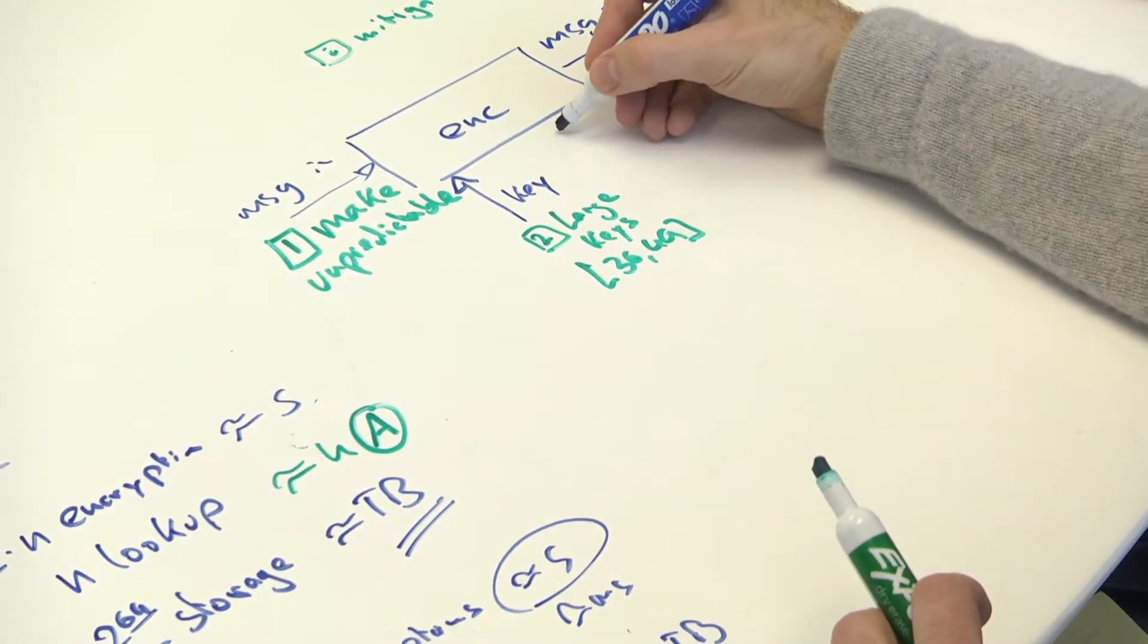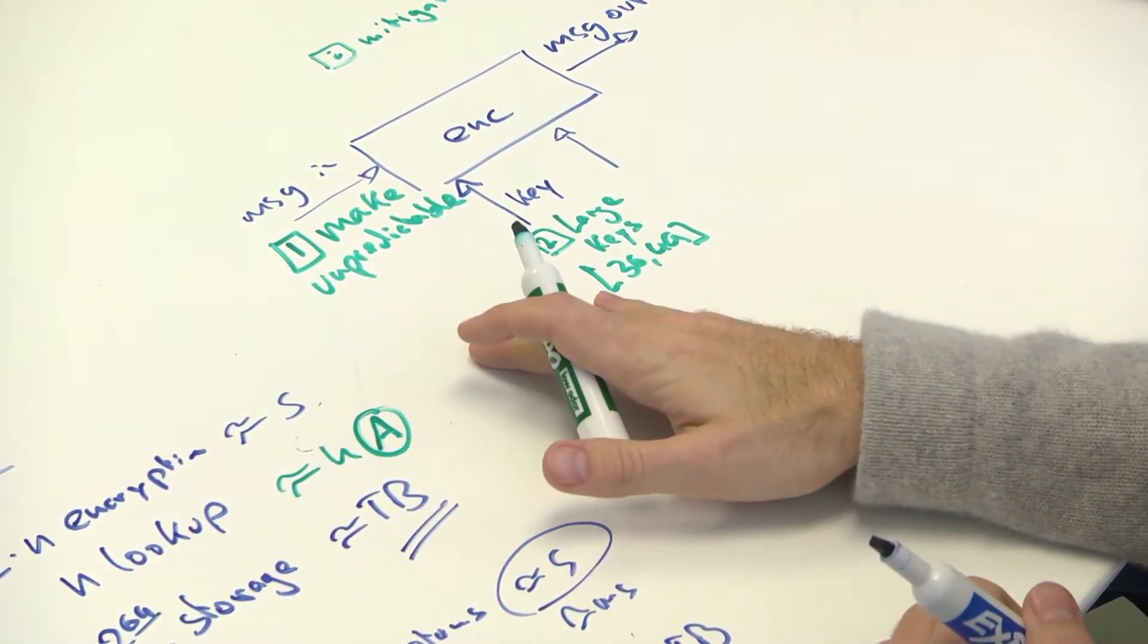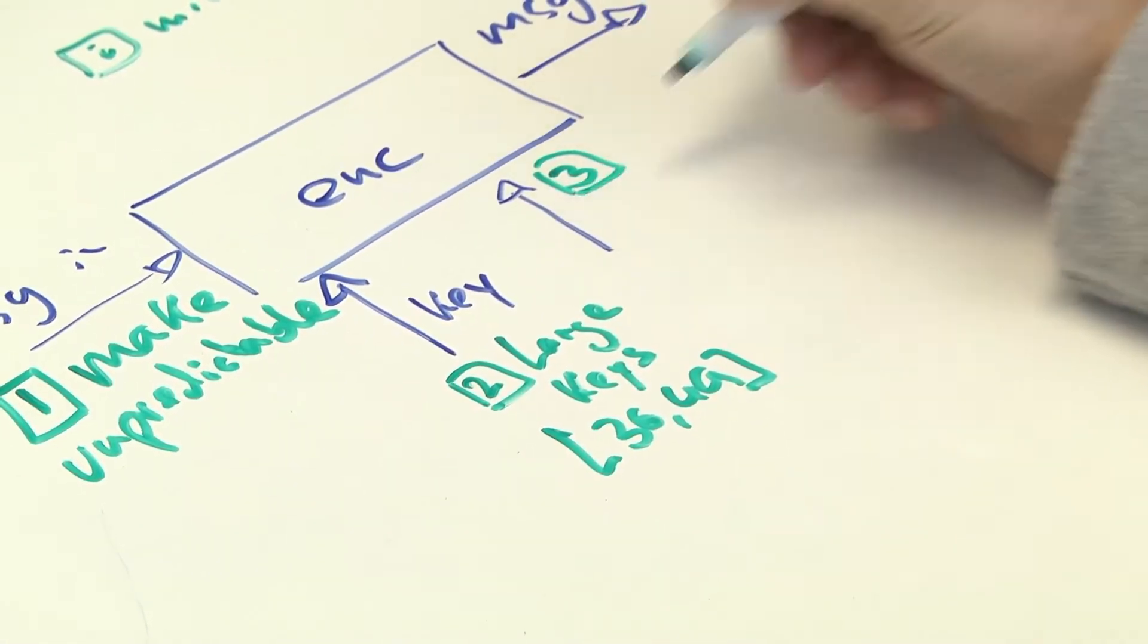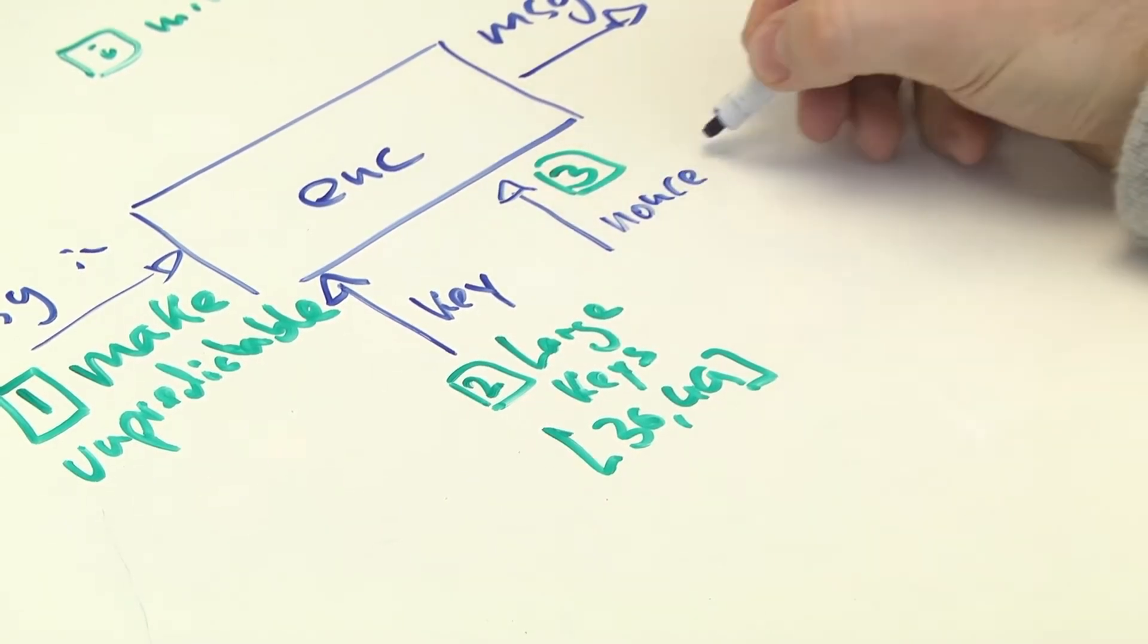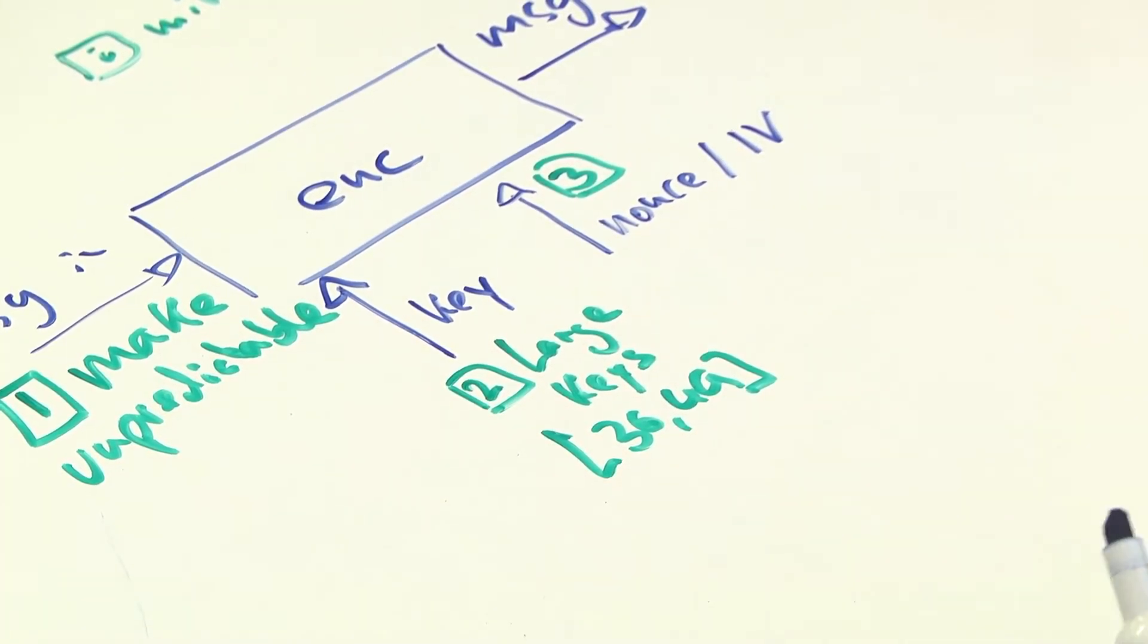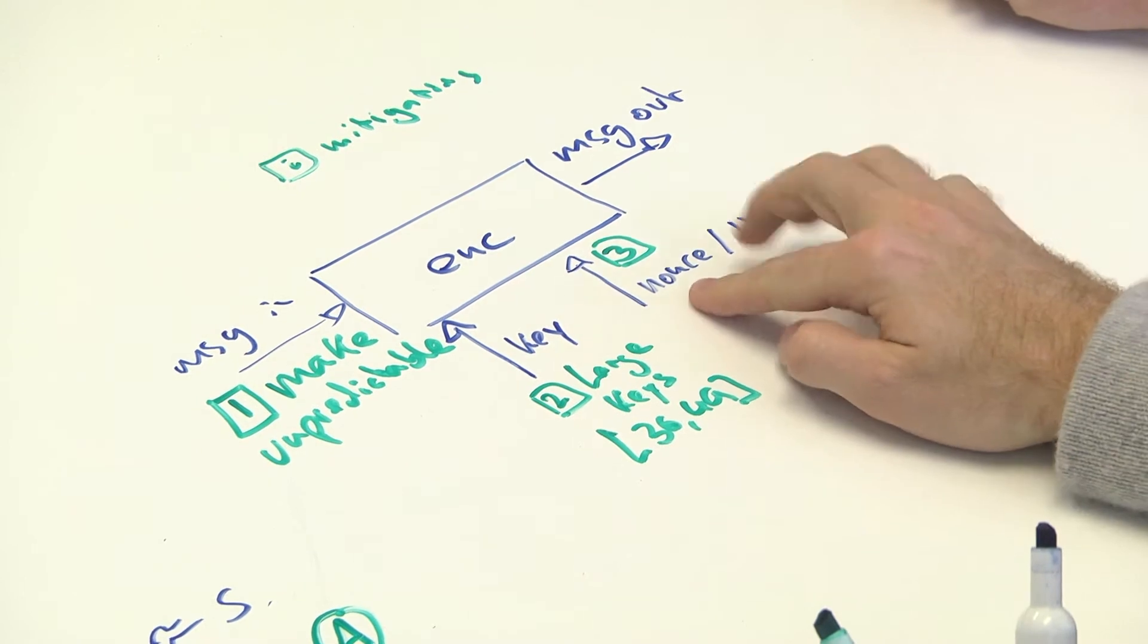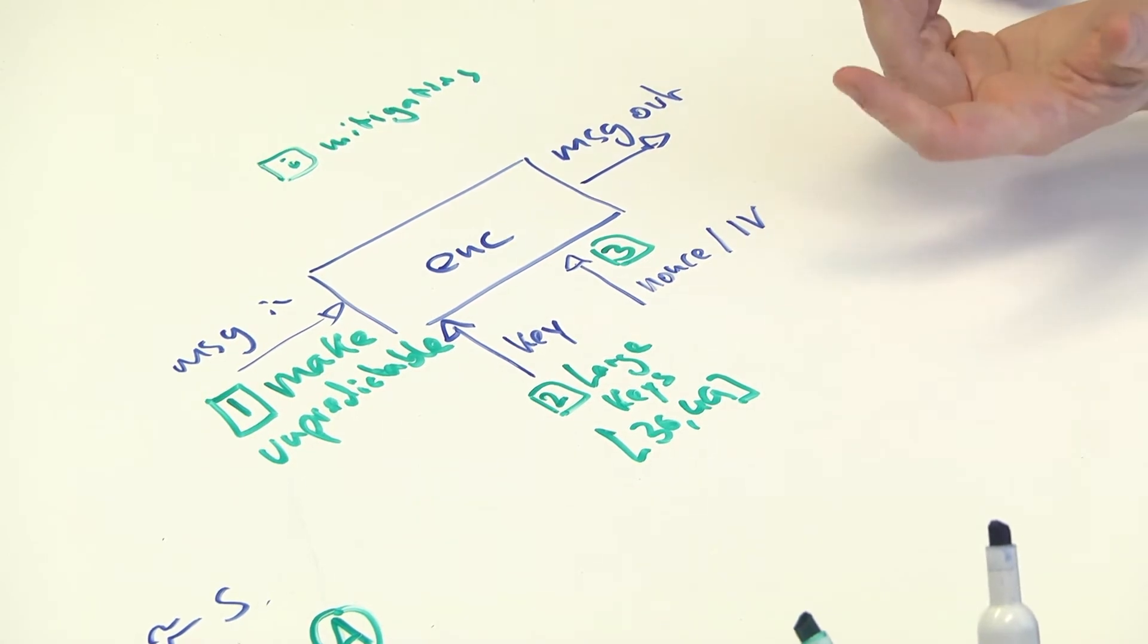And then a third way of protecting against these types of attacks that assume if you predict a message, you have a direct mapping between message out and key is to introduce an auxiliary input. It's usually called either a nonce for random number or an initialization vector. And GSM, in fact, does have an initialization vector. So you would think that it breaks the correlation between key and message, because now you'd have to compute your table separately for every nonce. This is sort of like adding salt to passwords. Exactly.